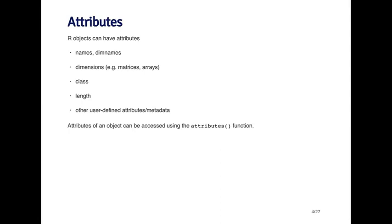Dimensions, so a matrix will have dimensions. For example, it'll have a number of rows and a number of columns. If you have a multidimensional array, you'll have more than two dimensions. The class of the object, so every object will have a class. For example, numeric objects, their class is numeric, and integer objects, their class is integer.